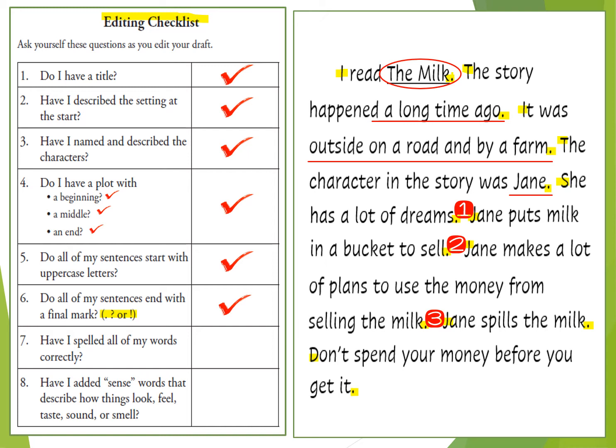Number seven is: have I spelled all of my words correctly? I do know that I spelled them all correctly. But when you are editing yours, you might look back at some words and want to double check. Some ways you could do that are by finding that word in some writing of your own, maybe in a book around your house, looking it up on the computer, or asking a friend, sibling, or other family member to help you with spelling — but not until you get to the editing point. When you are writing your draft, you should just be stretching it out all by yourself.